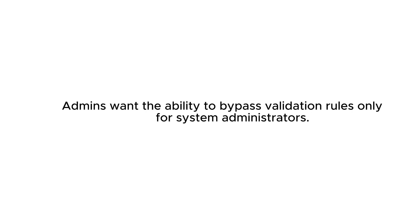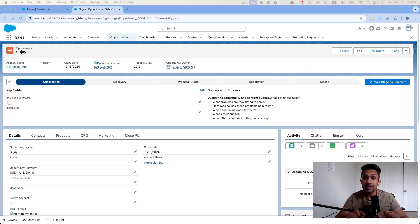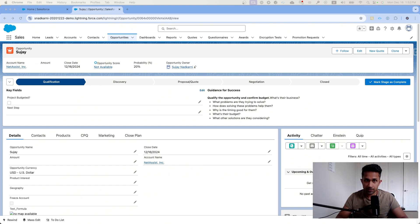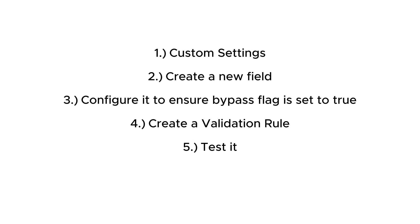Here's a simple use case we are going to look at today. The admins of an organization want the ability to bypass validation rules, but this bypass is applicable only for system administrators. Validation rules will still apply for all users belonging to other profiles. In order to do that, we are going to execute five steps. The first is to create a new custom setting of type hierarchy.